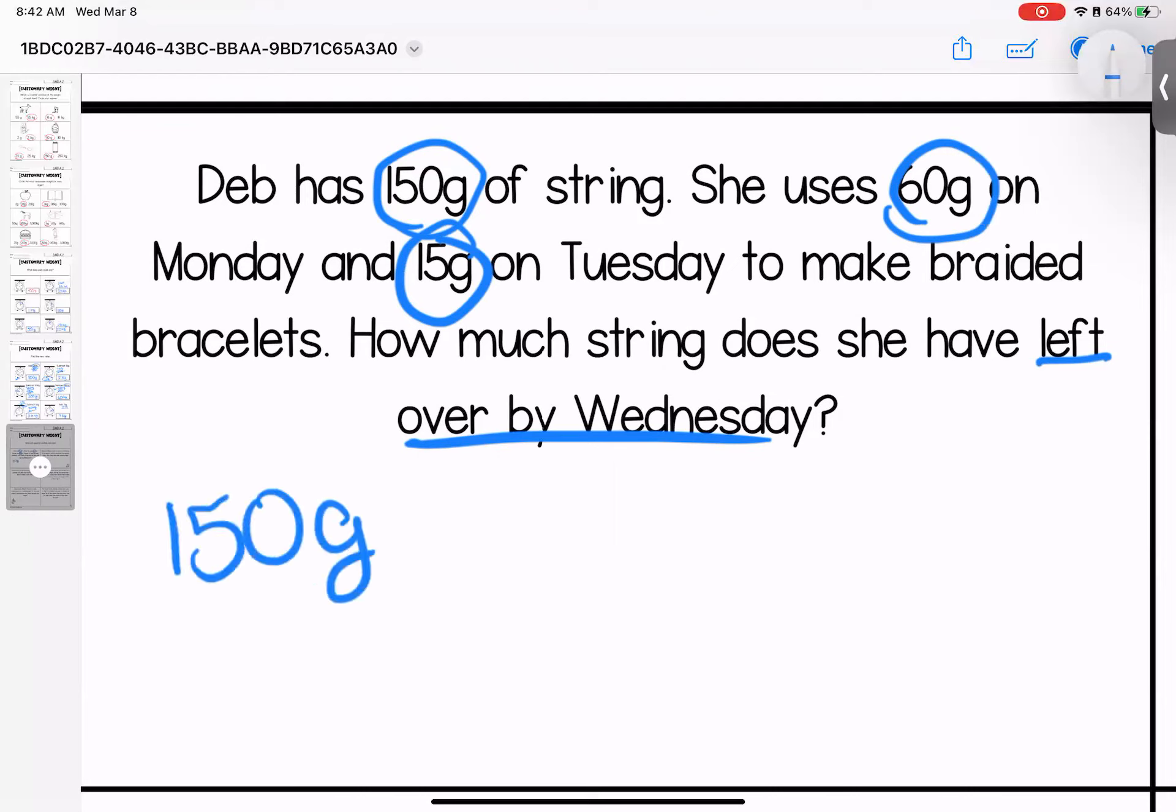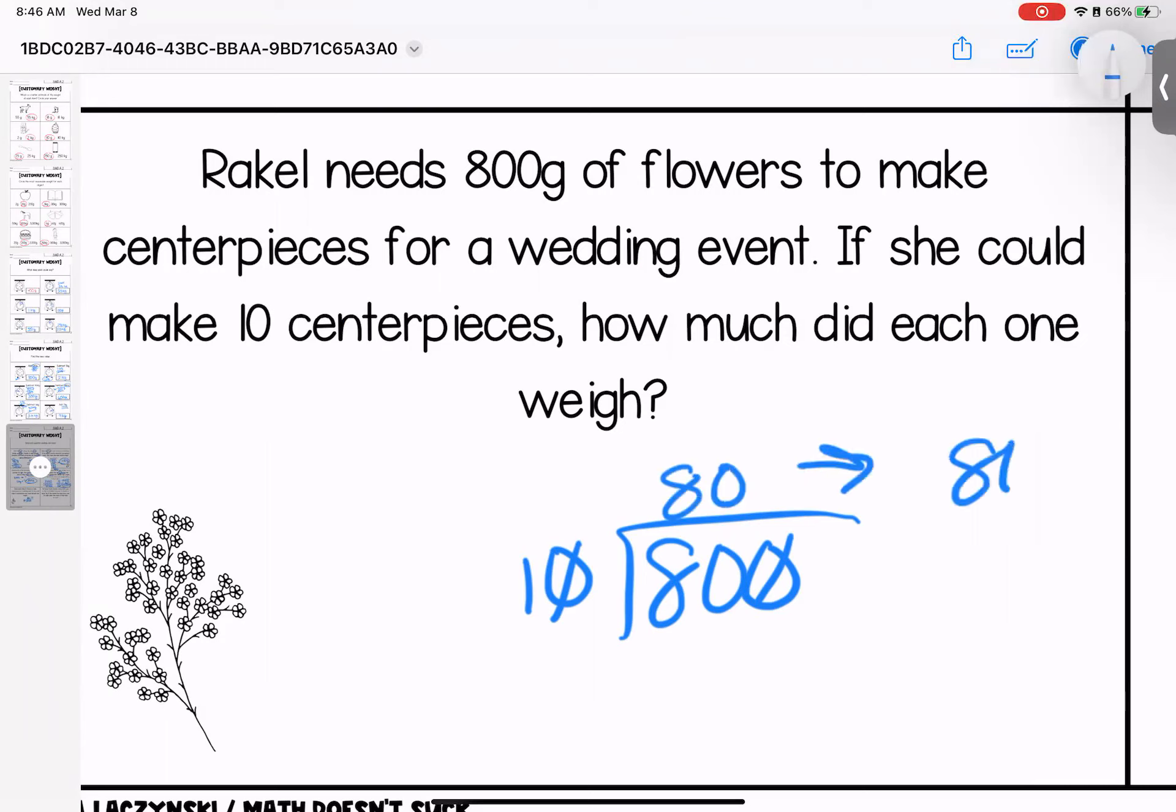Raquel needs 800 grams of flowers to make centerpieces for a wedding event. If she makes 10 centerpieces, how much did each one weigh? We can use division or we can use skip counting with this one. I can count by 10 until I get to 800 or I can divide as well. We have our base 10. Base 10 is our friend. So watch what I do. I can take my zero away from both and I can say one divides into 80, 80 times. When I add my zero back, I get 800 grams. So of those 10 centerpieces, we get 80. Let me show you another way that we can do this. Because we can do skip counting. And I think a lot of you probably did that. If you count by 10s to get to 800, how many 10s would you need?